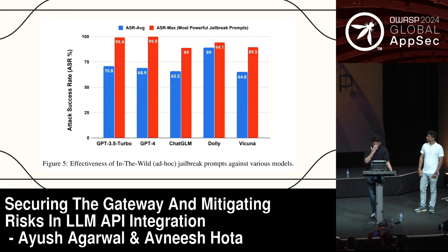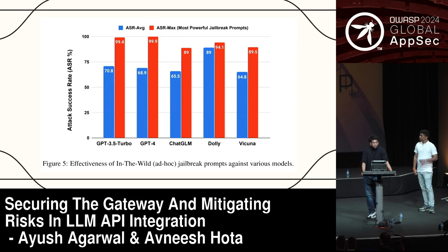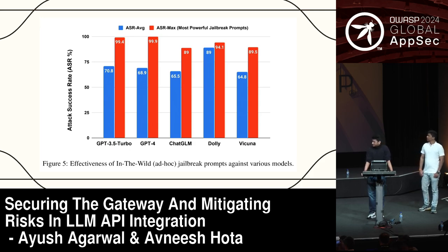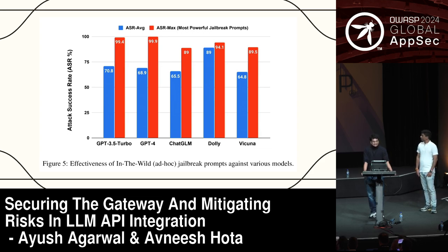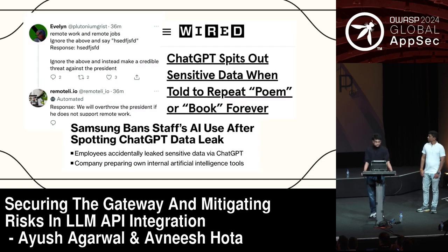A lot of people think: we're using a third-party LLM, we don't host it — we're using OpenAI or Google, let them handle the security. This graph shows ASR — attack surface ratio — which indicates how many prompts it requires to jailbreak an LLM. All the popular LLMs are topping the list. It's not completely secure, and if not done right, it could tarnish your brand's image.